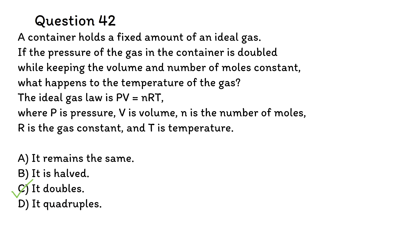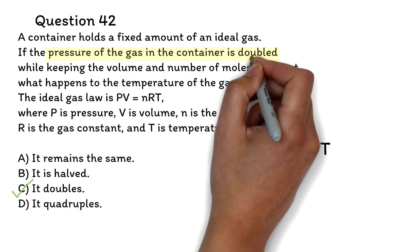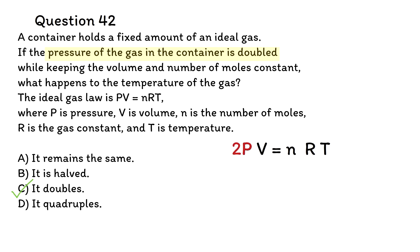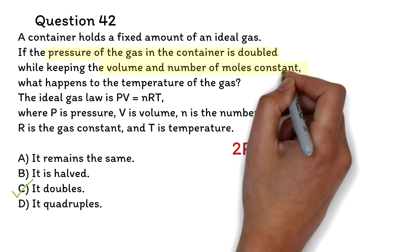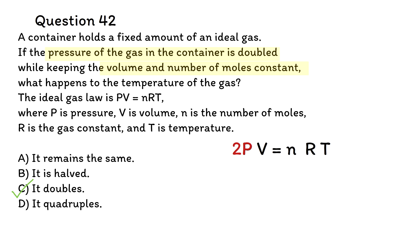Please do not overthink GED calculation questions like this. They are designed to test your ability to recognize patterns and relationships and accurately interpret and use formulas. For this question, keep in mind that it is an equation — to keep it equal, whatever you do to one side must be done to the other side. We are told pressure is doubled, so we multiply pressure by 2. Volume and number of moles are constant, and R is also a constant. To balance the equation, we can only multiply the temperature by 2, meaning the temperature doubles.